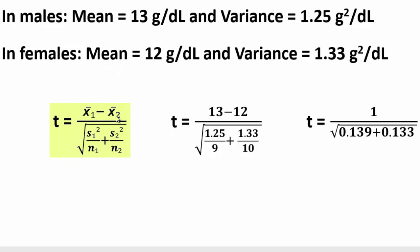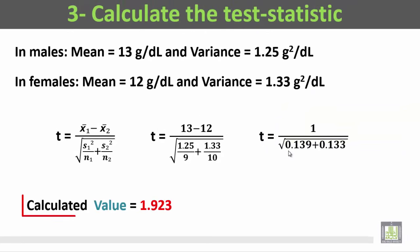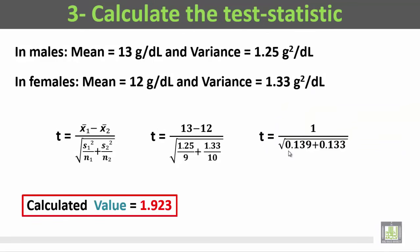t is equal to x̄₁ minus x̄₂ divided by the square root of (s₁² / n₁) plus (s₂² / n₂). So t will be equal to 13 minus 12 divided by the square root of (1.25 / 9) plus (1.33 / 10), which gives 1 divided by the square root of 0.139 plus 0.133. The calculated t value will be 1.923.